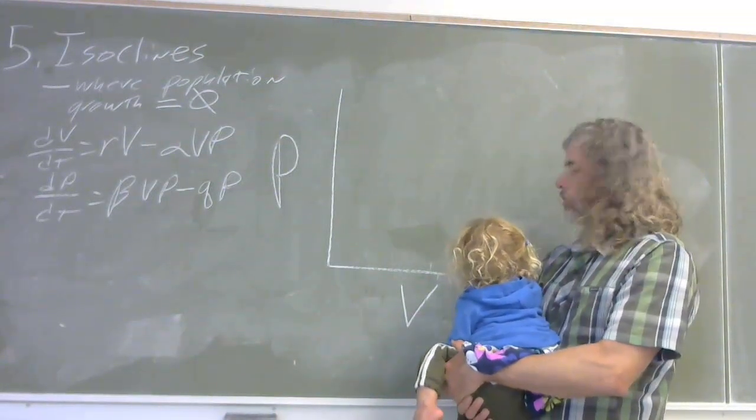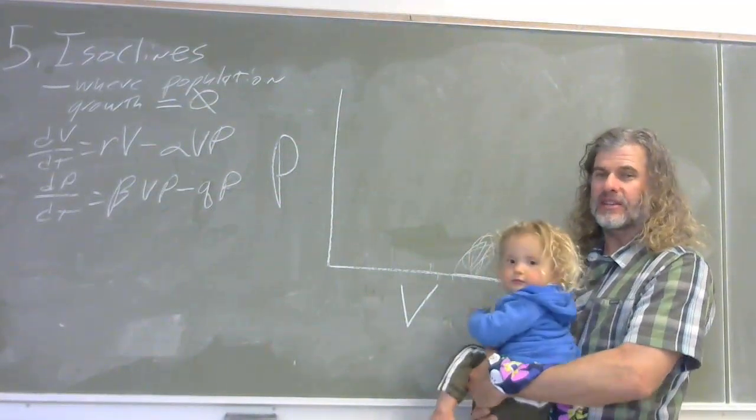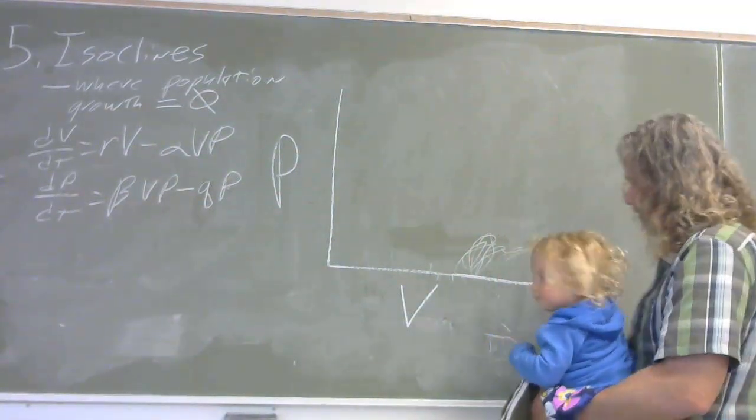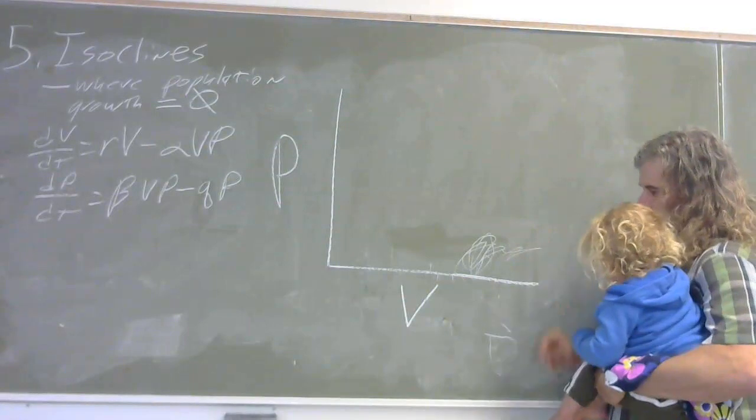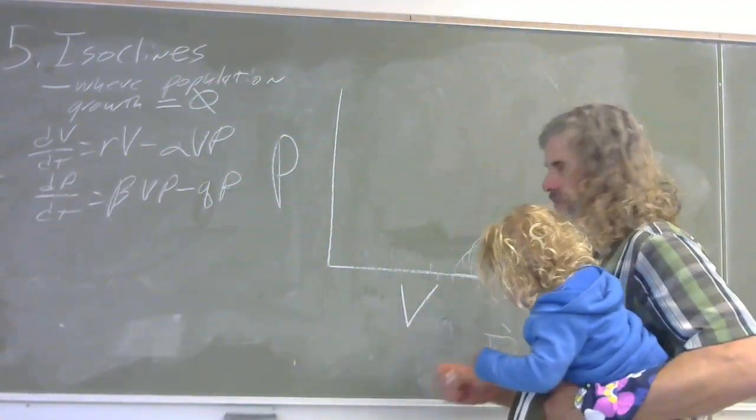By the time I'm done, hopefully, ideally, what our goal here is to give you a tool for understanding how the system of linked interactions works. Now, what an isocline is, it's the point where population growth is equal to zero.